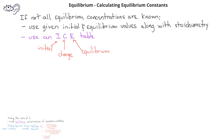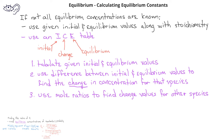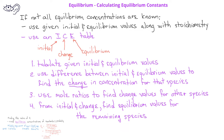In order to use the ICE table, you need to first tabulate all the known initial and equilibrium concentrations given in the problem. For any species where we have both an initial and an equilibrium concentration, we can calculate the change in concentration from initial to equilibrium. The most important step is to then use stoichiometry to find how much each of the other species will change by. Finally, once we know the initial and the change values, we can calculate the equilibrium concentrations of the other species.